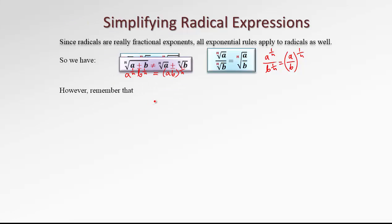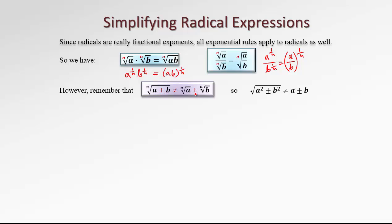However, we can't split a radical over addition or subtraction. So the nth degree radical of a plus b is not the same as the nth degree radical of a plus the nth degree radical of b, and neither with the minus. Particularly, the square root of a squared plus or minus b squared is not equal to a plus or minus b. This is a common mistake. Please remember we can't reduce the index of the radical with the exponent if there is addition or subtraction inside the radicand — there is no such rule.